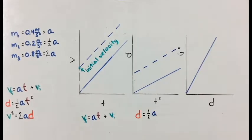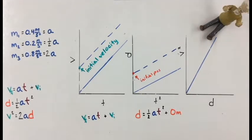Similarly, if our cart had not started at the origin, our distance time-squared graph would have a non-zero y-intercept, which would represent the initial position.